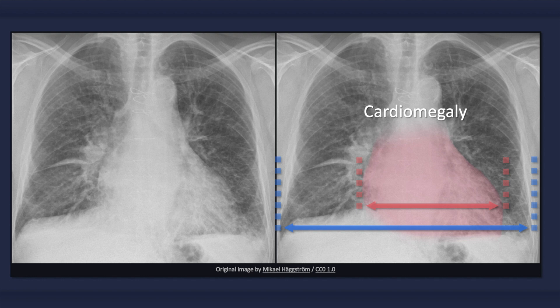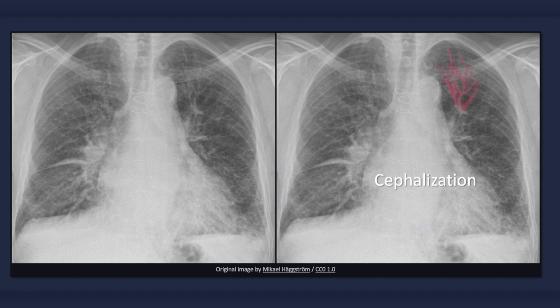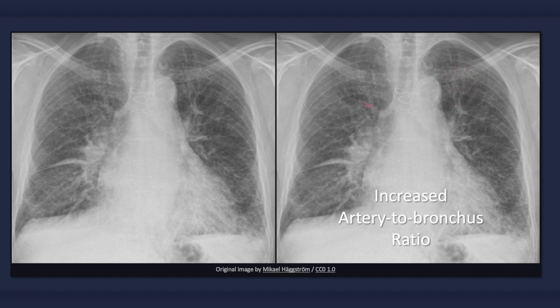On anterior-posterior films, determination of heart size is unreliable due to magnification. Vascular redistribution is one of the first signs of congestive heart failure. Increased blood flow to pulmonary vessels in the upper lung zones results in an increase in size relative to blood vessels in the lower lung zones. This caudal-to-cranial redistribution should only be inspected for in an erect x-ray, since equalization of blood flow may occur in the supine position. The finding of upper lobe blood diversion can be difficult to appreciate on a plain radiograph.